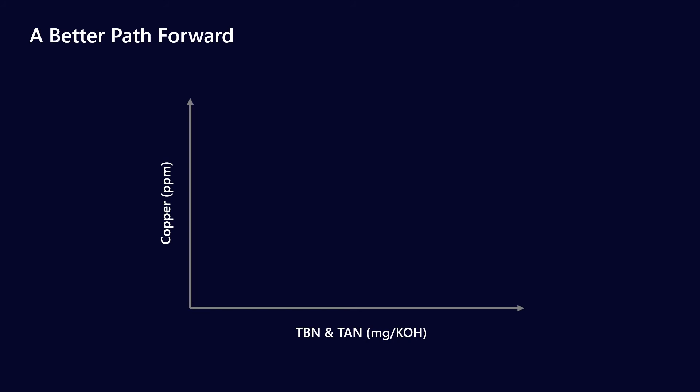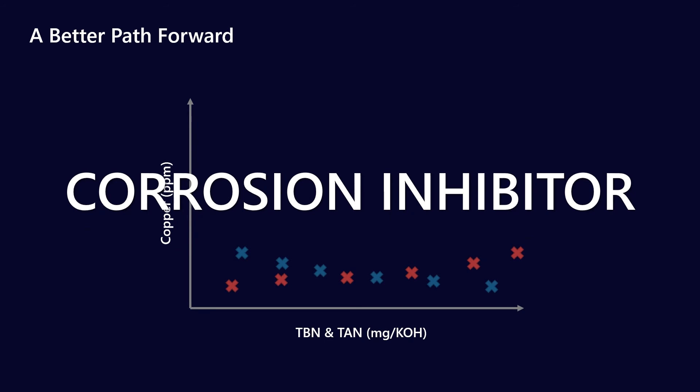So why not plot against metals which are susceptible to corrosion? And what you'll see is, let's say for example, if I were to plot TBN as it reduces, I should see an increase in copper as TBN reduces. And similarly, as TAN increases, I should see an increase in copper. Now why wouldn't I see an increase in copper if the total acidity of the engine oil has increased? If the corrosive potential has increased, why don't I see an immediate jump in the copper values?